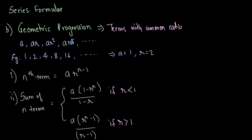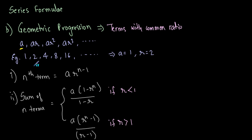Now let us look at the various formulas that geometric progression offers. A geometric progression is a sequence of terms with a common ratio. The first term is named a, and then to get the next term, you multiply it by the ratio r. So we have a as the first term, the second term is ar, the third term is ar² and so on.